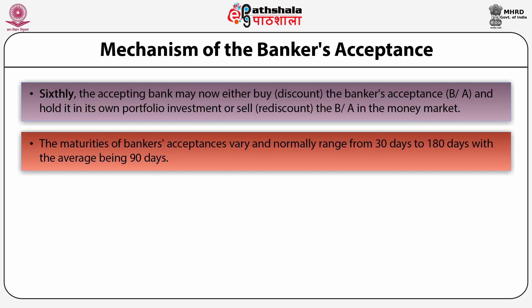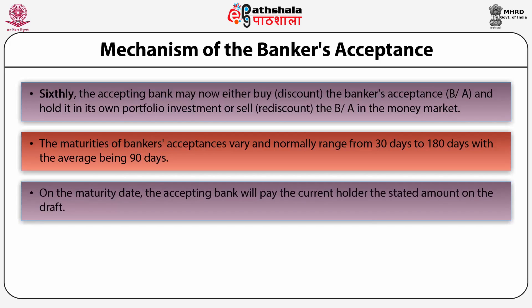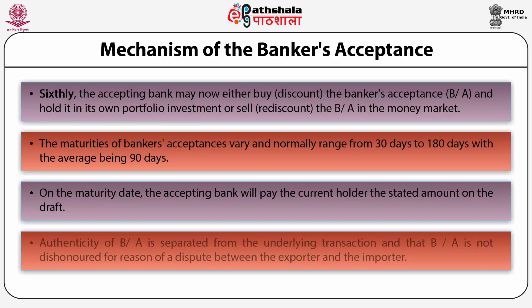Maturities should cover the entire period needed to ship and dispose of the goods financed. On the maturity date, the accepting bank pays the current holder the stated amount on the draft. The holder of a banker's acceptance can recover the full amount from the last endorser if the importer is not willing to pay at maturity. The authenticity of banker's acceptance is separated from the underlying transaction, so it is not dishonoured due to a dispute between exporter and importer — this enhances marketability and reduces riskiness.